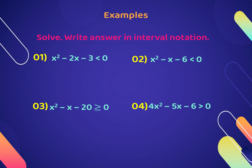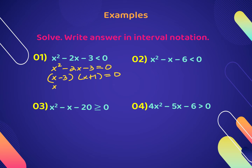First, make sure we have a 0 on either the left or the right side, which we do. Now we solve as if it were an equal sign: x² - 2x - 3 = 0. We factor by finding factors of negative 3 that give negative 2, which is negative 3 and positive 1. Setting each factor equal to 0 and solving gives x = 3 and x = -1.